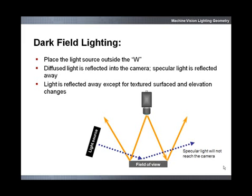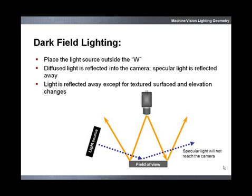Once again, the position of the light source will determine what type of lighting will result. A light source outside of the W reflects light away from the camera. The majority of dark field illumination reflects away from the camera, while only desired feature textures will reflect diffuse light back to the camera.